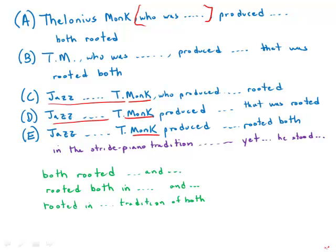Thelonious Monk, the subject of the sentence, is now directly adjacent to the verb. And that's always something advantageous. If you can put the subject next to the verb, why separate them by a clunky phrase? So rather than have this clunky phrase separating the subject of the sentence and the verb, we're just going to put the subject and the verb together. That means we're going to eliminate answer choices A and B.